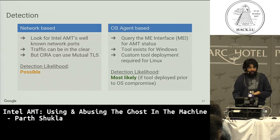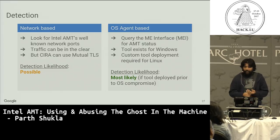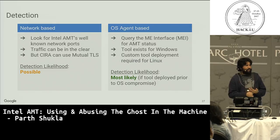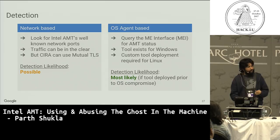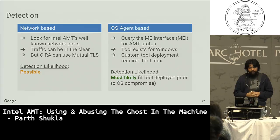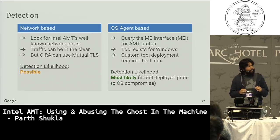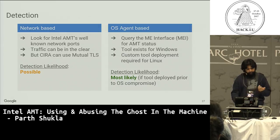The second detection option is an OS agent: have an agent running as root, talking to the ME interface. If the attacker already controls the OS when your agent first starts running, the response will be faked. So your tool has to be deployed prior to OS compromise. For Windows this is not too hard as there is existing tooling; for Linux, you would have to write and deploy your own. I did network captures of CIRA sessions using a physical network tap between the laptop and LAN, which confirmed mTLS.